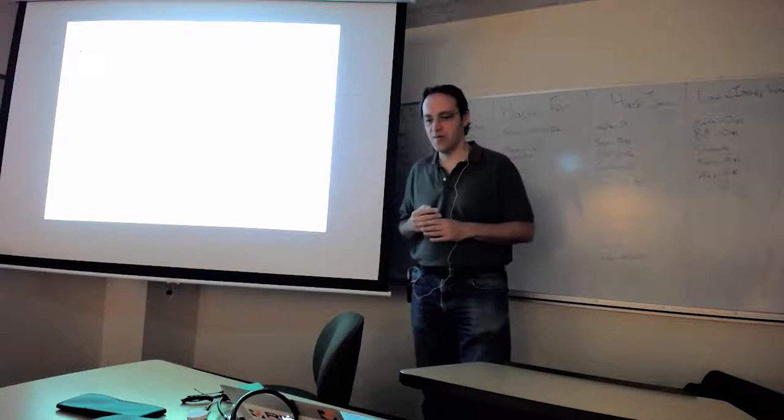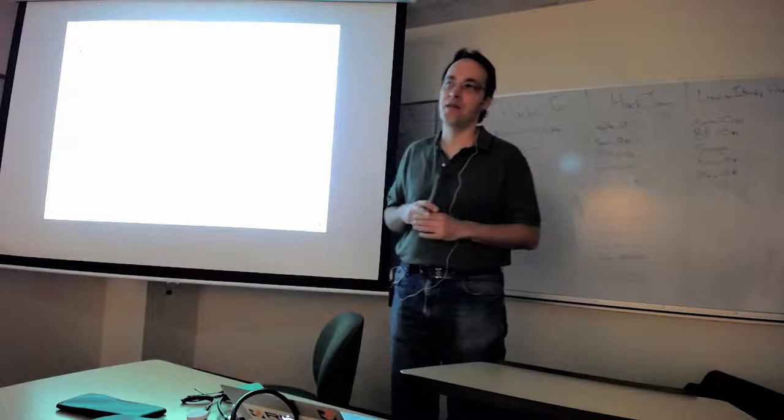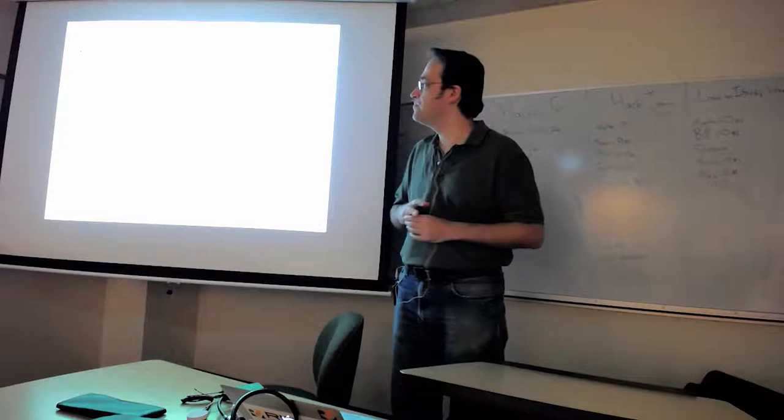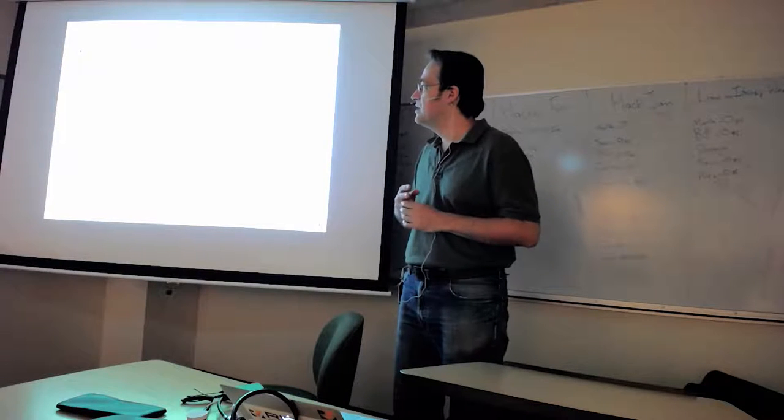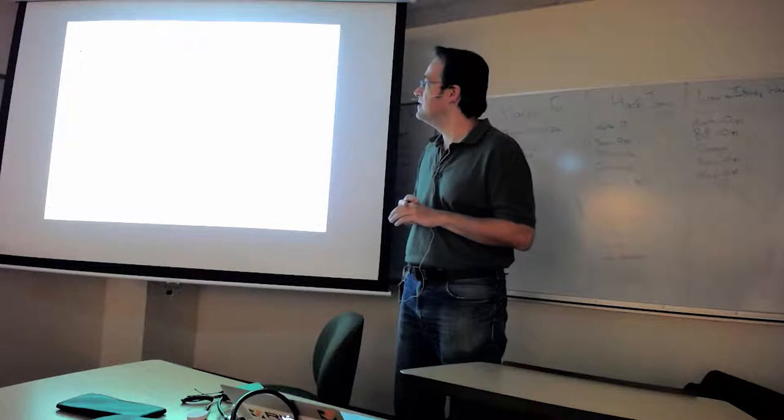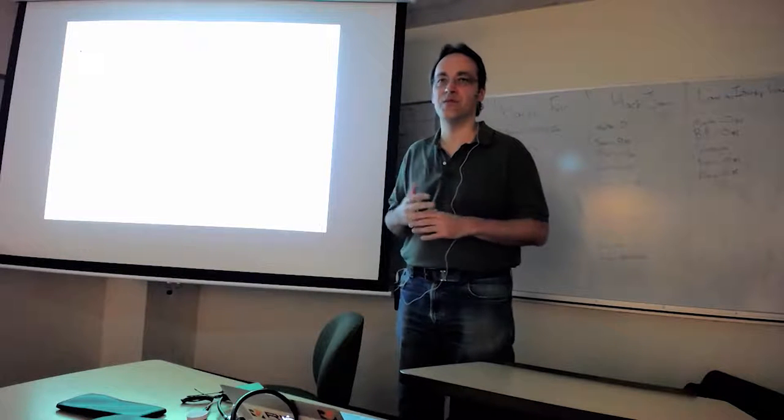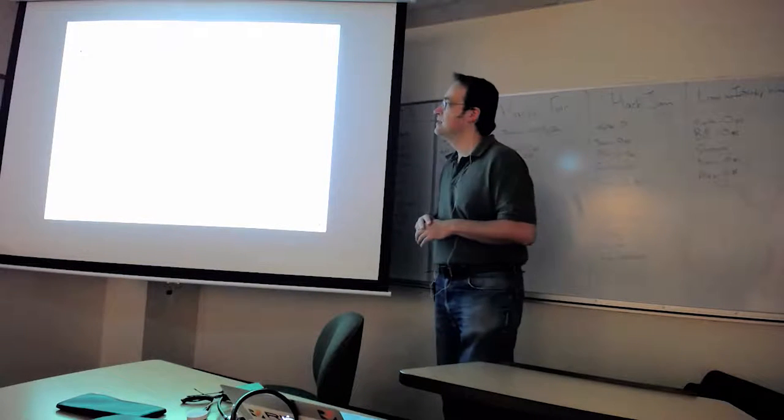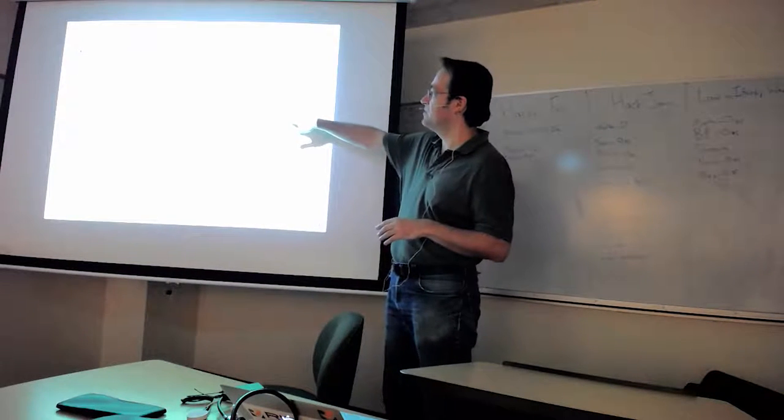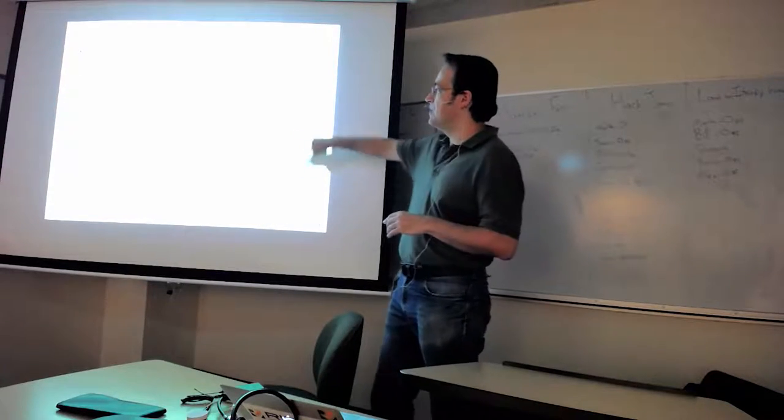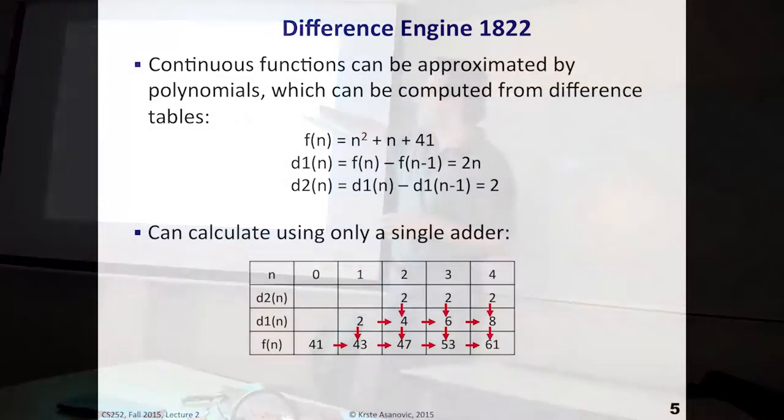And the first idea he came up with was something called the difference engine. So the difference engine was a way of calculating any continuous function that you can approximate with a polynomial. So any kind of, anything that you can represent as a polynomial, if you start, this is an example, n squared plus n plus 41. And if you differentiate that, you get the first derivative, differentiate again, you get the second derivative. And if you differentiate often enough, you end up with constants.